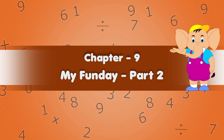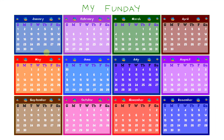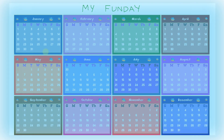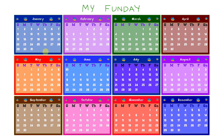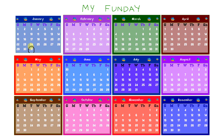Chapter 9: My Fun Day. Now let's see how many days does each month have. I have a calendar here for you. If we look at the calendar, which months have 31 days? We look here at the first month, which is January — yes, it's got 31 days. Let's look at the next one: March.